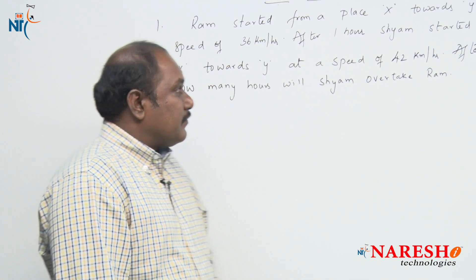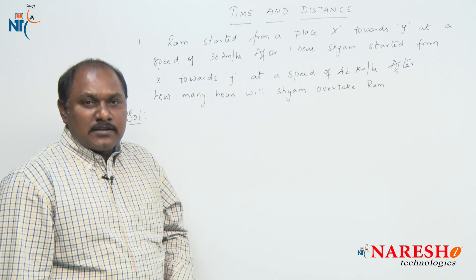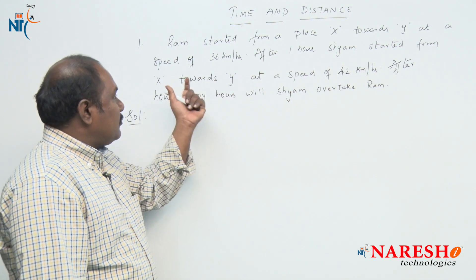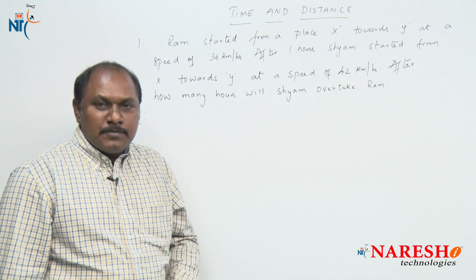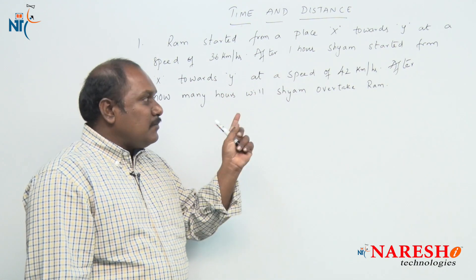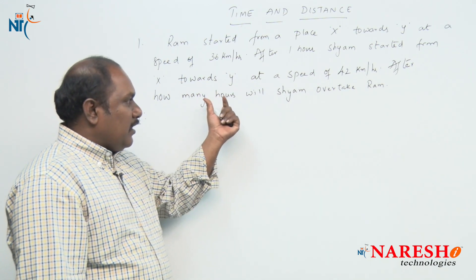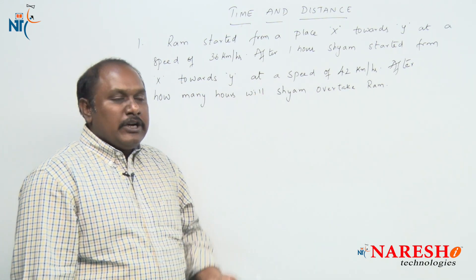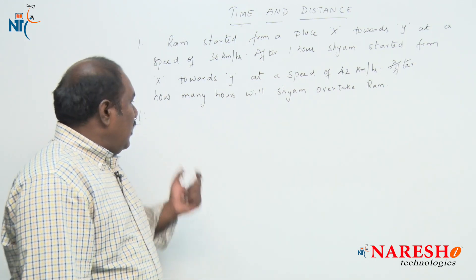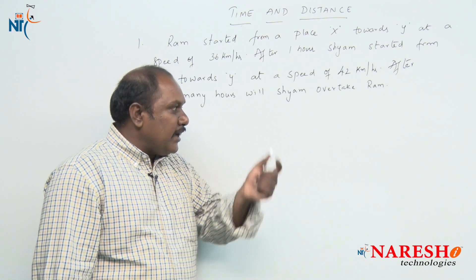The first question: Ram started from a place X towards Y at a speed of 36 km per hour. After 1 hour, Shyam started from X towards Y at a speed of 42 km per hour. After how many hours will Shyam overtake Ram?